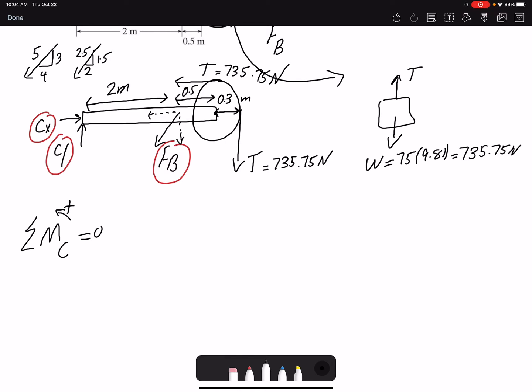Summation of moment about point C, creating a clockwise moment, so it would be negative. The force is FB, only the vertical component, so 3 over 5, and then multiplied by the moment arm would be 2. Then I have the force of tension. This tension up here is creating a counterclockwise moment, so it would be positive. And the moment arm is 0.3. So positive 735.75 times the moment arm 0.3.